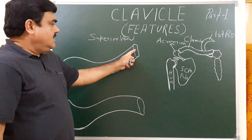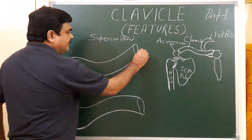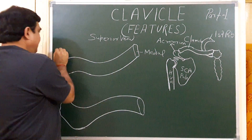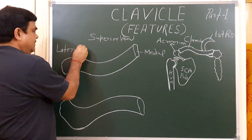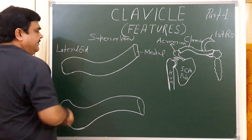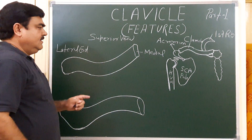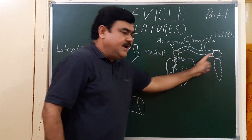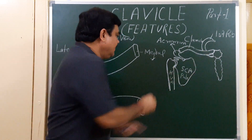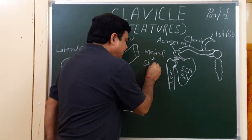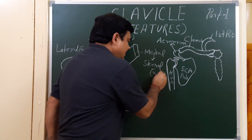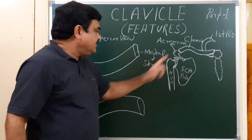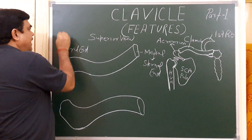The clavicle has two ends: the medial end and the lateral end. The medial end is also known as the sternal end, because it joins with the sternum. The lateral end is also known as the acromial end.